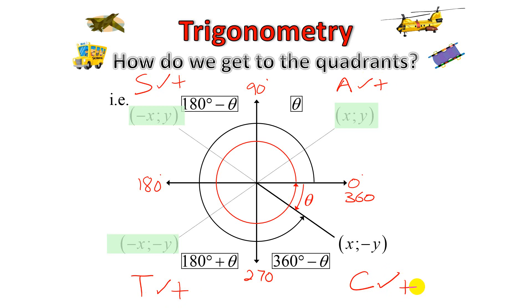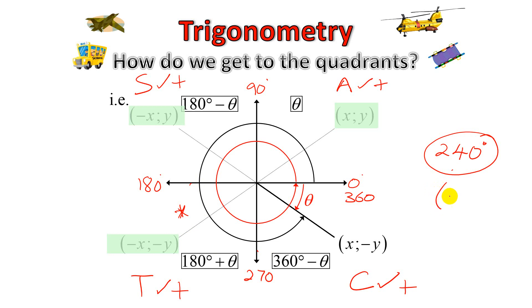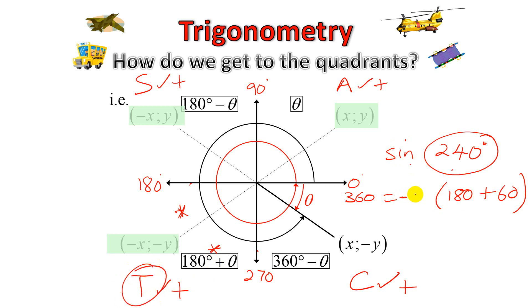As an example, if they give us an angle of 240 degrees. To get to 240 degrees using the reduction formula, we know 240 degrees has to be between 180 and 270, which takes us into quadrant 3. So we can break this angle up into 180 plus 60. It all depends which trig ratio we're using. If this was sine, we know that in quadrant 3 only tan is positive, so this changes to negative sine of 180 plus 60, which reduces down to minus sine 60.